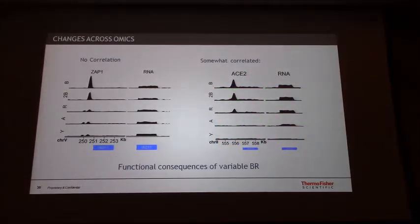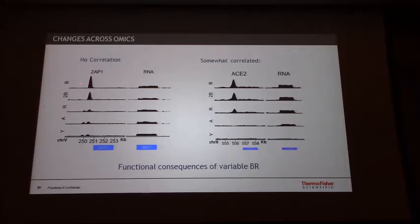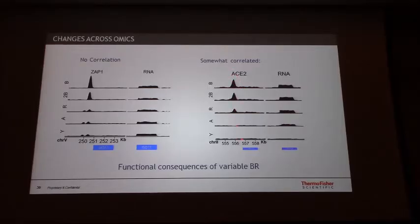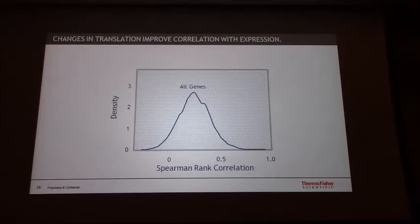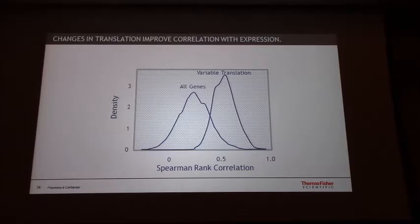We have functional consequences of variable regions when we look at the transcription factor binding data. For example, looking at one transcription factor, you can see it's highly variable in binding intensity across different strains, but the RNA levels don't change. Looking at another transcription factor, we see different binding levels that do correlate somewhat with RNA. When we try to correlate the proteomics data with transcription globally, comparing all genes, we get absolutely no correlation. But if we take only the differentially expressed proteins, then we do see correlation, which I think is interesting.